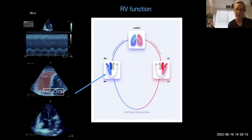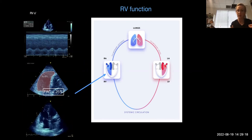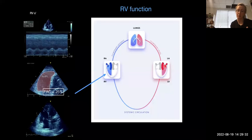For RV systolic function, list the parameters: RV S', TAPSE, fractional area change, and visual eyeballing. You don't need extensive detail — just list them. Mention the need for repeated examination depending on context.